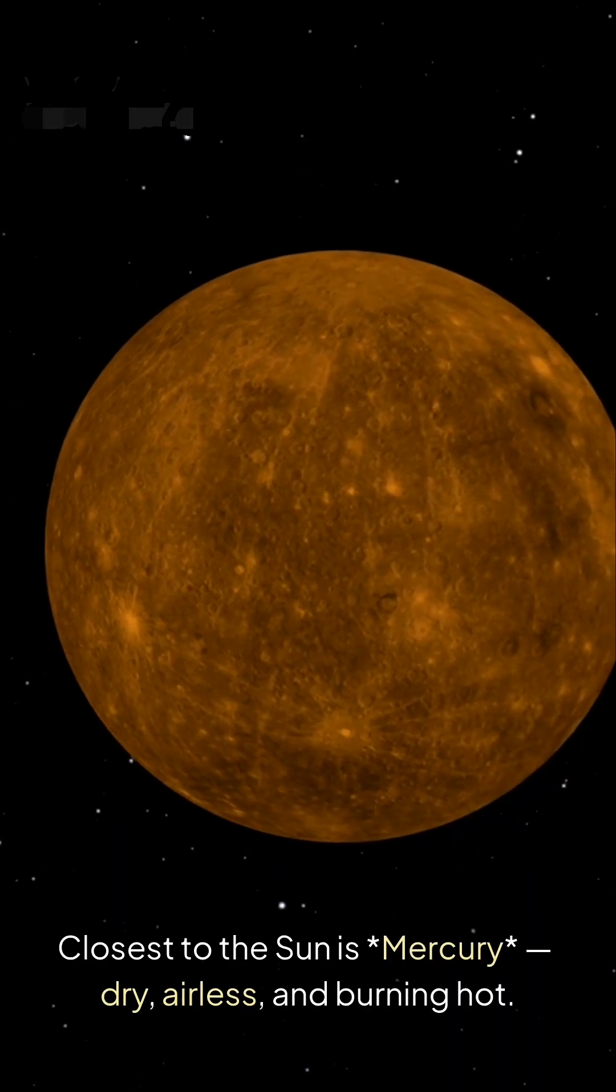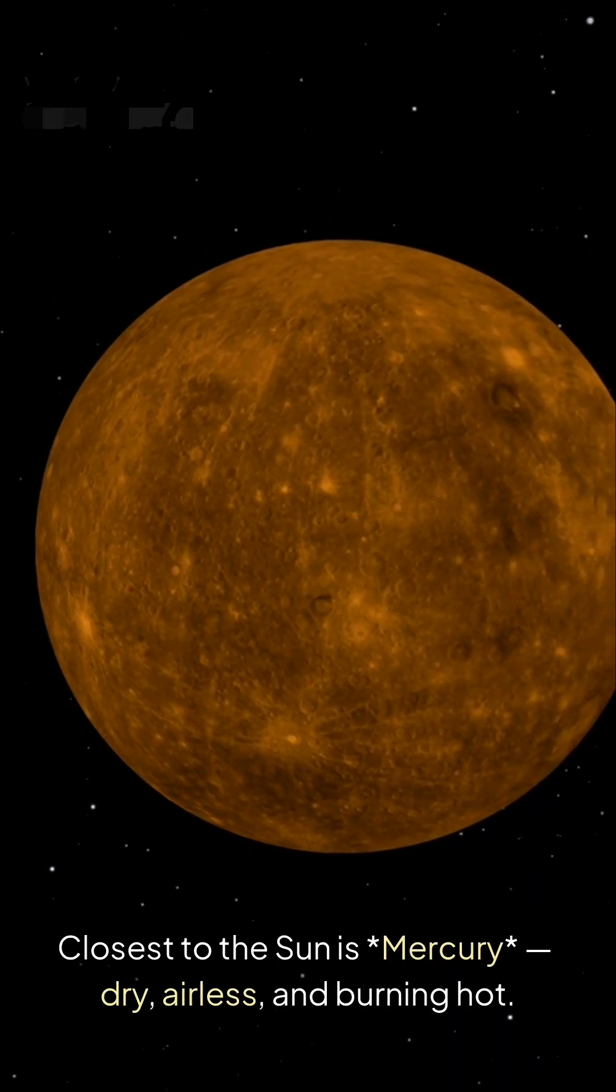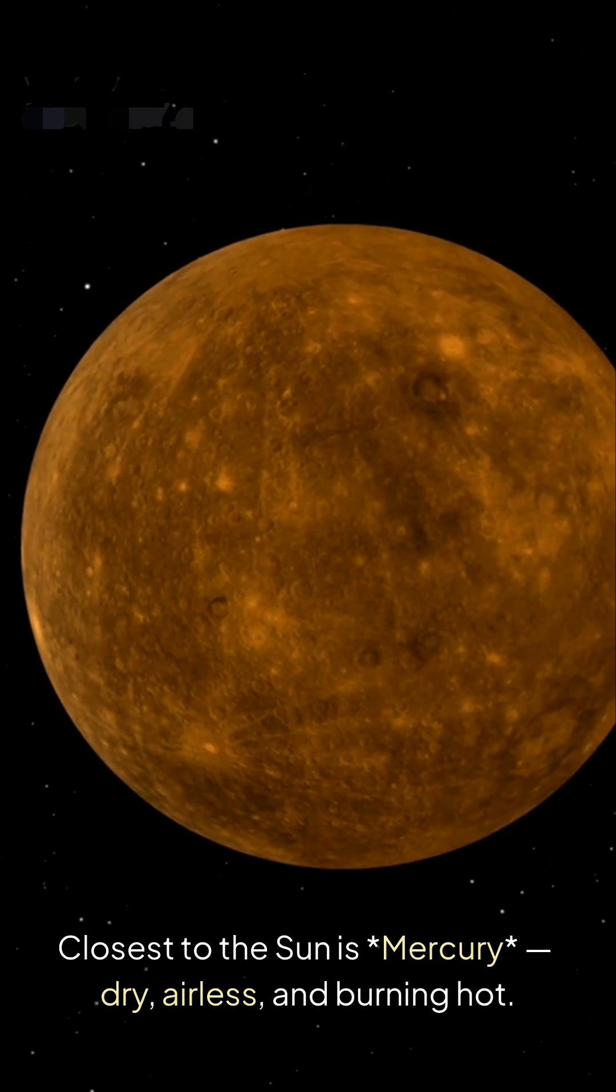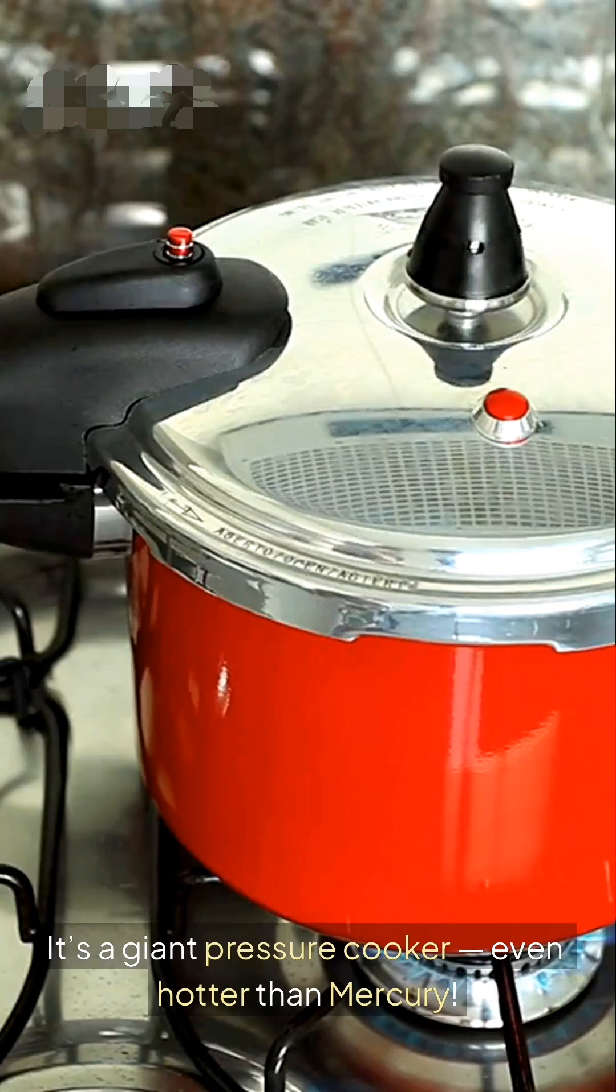Closest to the sun is Mercury—dry, airless, and burning hot. Venus is a giant pressure cooker, even hotter than Mercury.